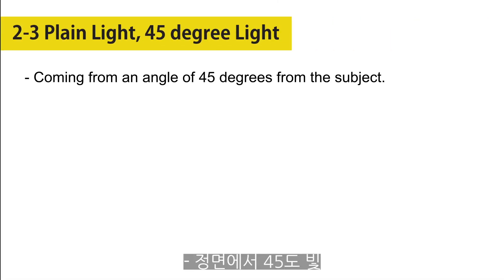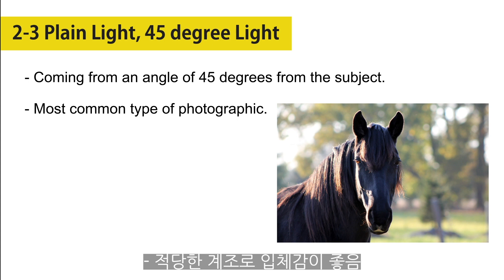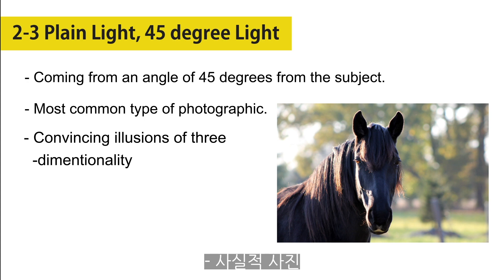Plain light comes from an angle of 45 degrees from the subject. It is perpendicular to the camera. As the most common type of photographic illumination, it produces strong and generally well-positioned shadows, and thereby creates convincing illusions of three-dimensionality.